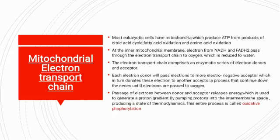The electron transfer chain comprises an enzymatic series of electron donors and acceptors. Each electron donor passes electrons to a more electronegative acceptor, which in turn donates these electrons to another acceptor — a process that continues until electrons are passed to oxygen. The passage of electrons between donor and acceptor releases energy, which is used to generate a proton gradient by pumping protons into the inner membrane space. This whole process is known as oxidative phosphorylation.